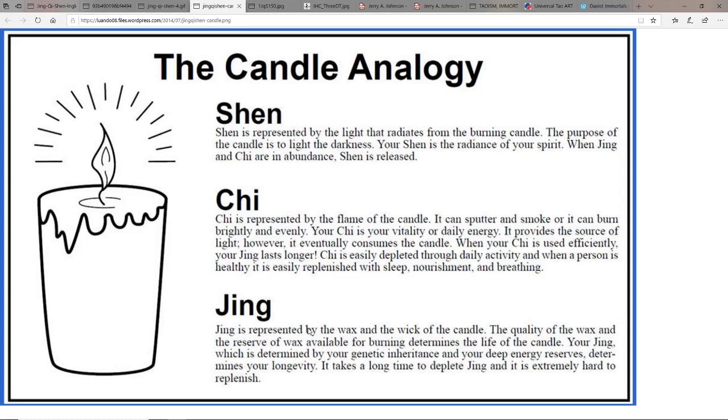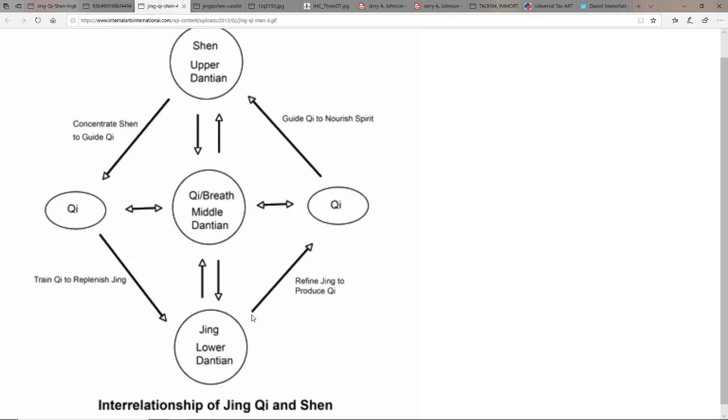Then shen is the light that radiates from the burning candle. The purpose of the candle is to light the darkness. Your shen is the radiance of your spirit. When jing and chi are in abundance, shen is released.